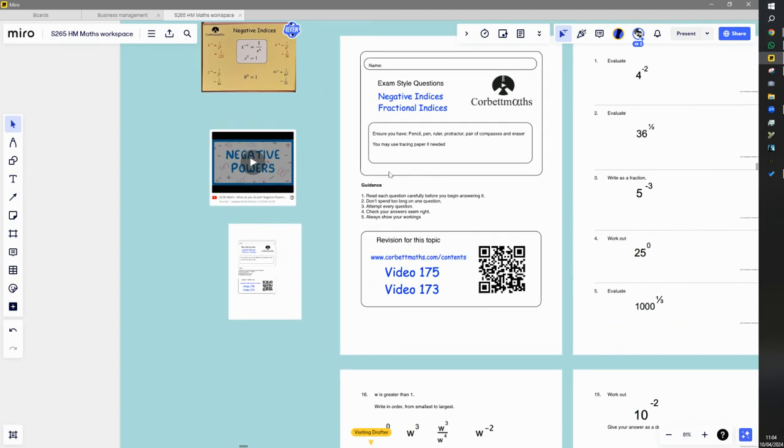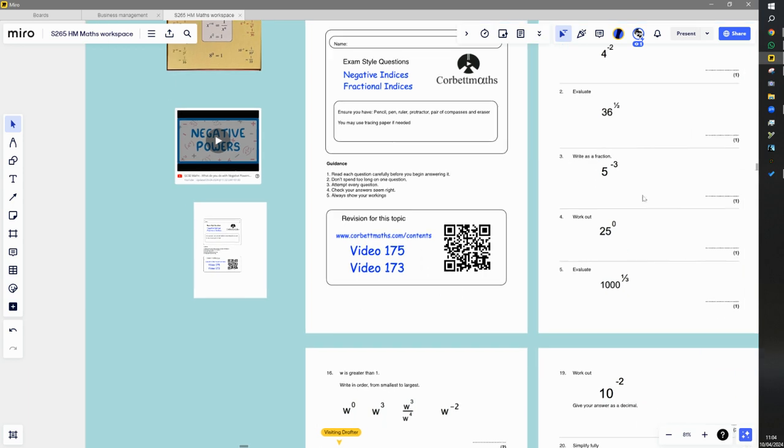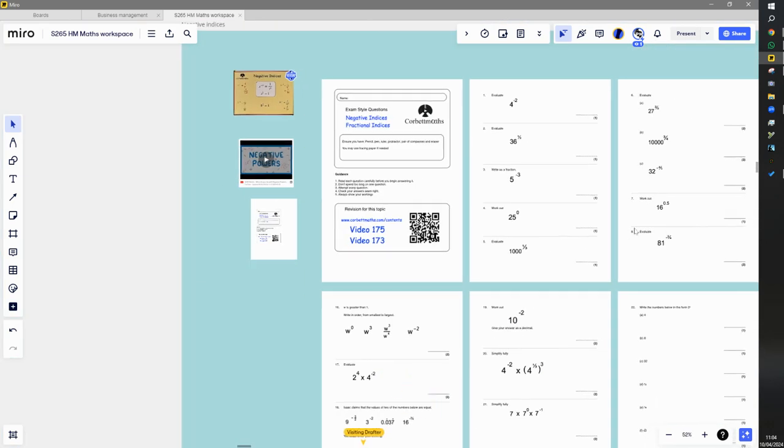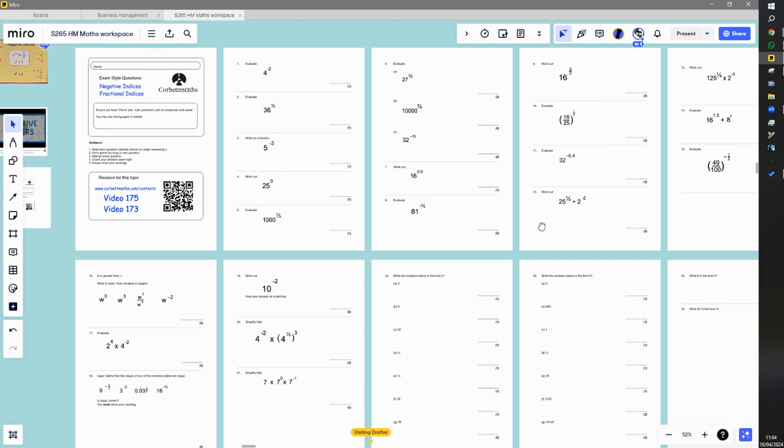Right, so negative indices. Also fractional indices - I don't think you need to do that at Foundation. It's a higher tier topic. So anything on fractional indices like question two we will skip, question five we'll skip and so on. Unfortunately there's a few fractional indices.